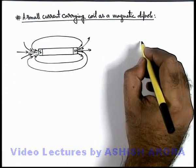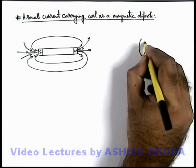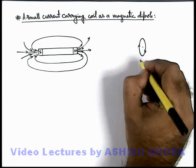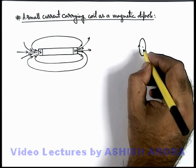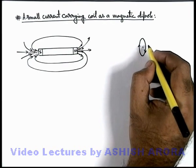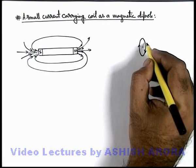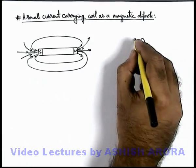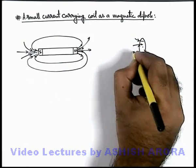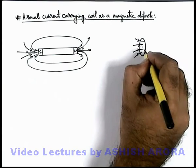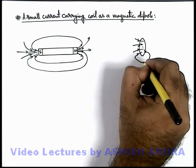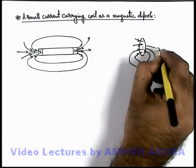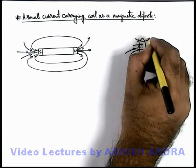Now if we just talk about a current-carrying coil — this is a current-carrying coil which carries a current in a clockwise manner seen from one side — then in this situation we can see that due to this coil, by the right-hand thumb rule, the magnetic induction exists in this direction like what I am drawing here, and close looping of these lines is completed in the outward region in this manner.